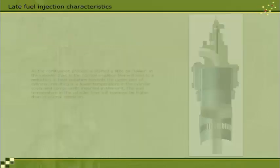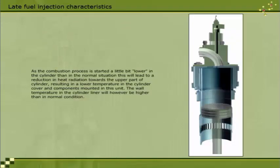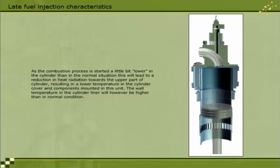As the combustion process is started a little bit lower in the cylinder than in the normal situation, this will lead to a reduction in heat radiation towards the upper part of the cylinder, resulting in a lower temperature in the cylinder cover and components mounted in this unit. The wall temperature in the cylinder liner will, however, be higher than in normal condition.